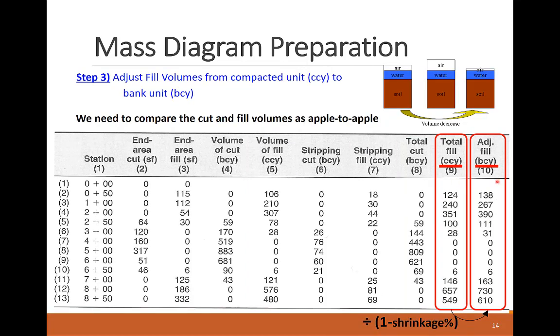The next step is where we bring the cut and fill volumes to an apples-to-apples value. Remember that we are preparing this mass diagram to be able to balance the cut and fill volumes, which we cannot do if they have different measurement units. So, we are transferring the fill quantities from compacted cubic yards to bank cubic yards by dividing over the complement of the shrinkage percentage value. Please refer to the previous lesson where we covered the soil properties to review the soil transformation between bank and compacted states.